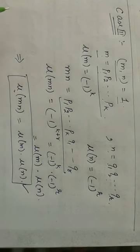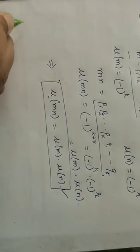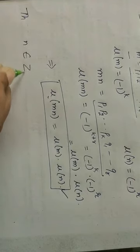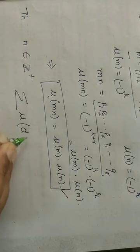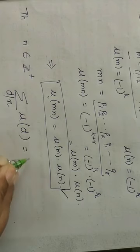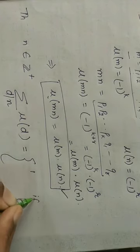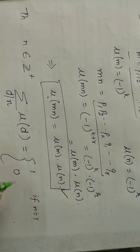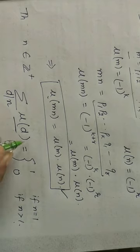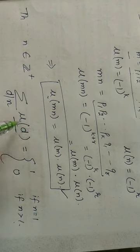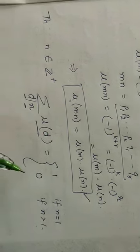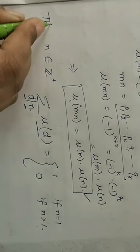The next result we are going to prove: for any natural number n, the value of Σ_{d|n} μ(d) equals 1 if n = 1, and 0 if n > 1. We are computing the sum of the Möbius function over all divisors of n.